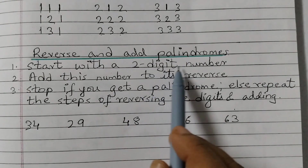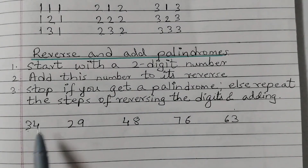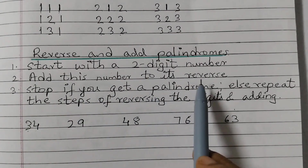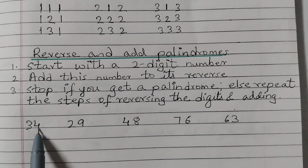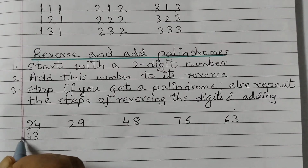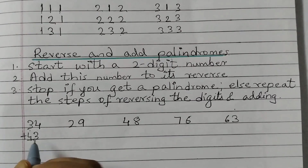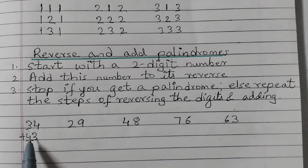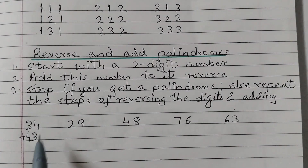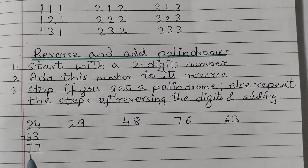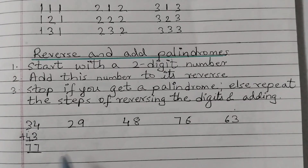We start with a two-digit number. Add this number to its reverse. The reverse of 34 is 43. When we add 34 and 43: 4 plus 3 is 7, and 3 plus 4 is 7. We get 77 — a palindrome.